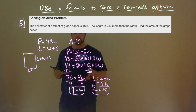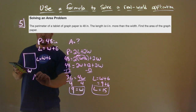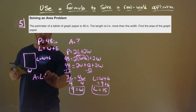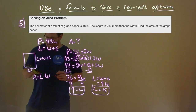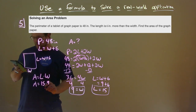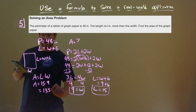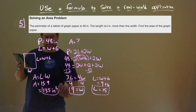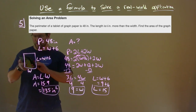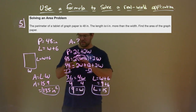So W equals 9 and L equals 15. We can now find the area. Area equals length times width for a rectangle. Our length is 15 and our width is 9. Multiplying: 15 times 9 is 135. Since the units are inches, the area is 135 inches squared.